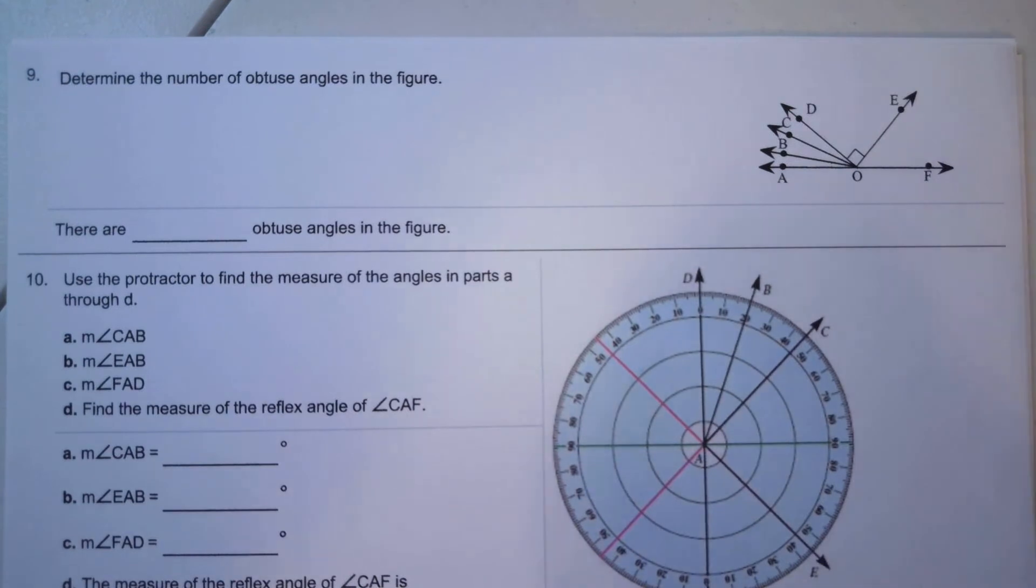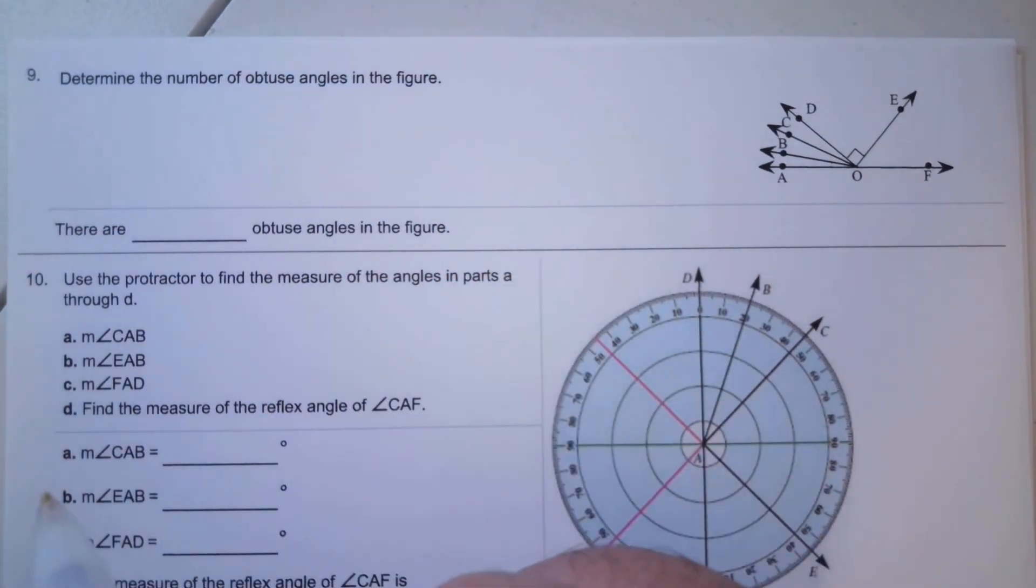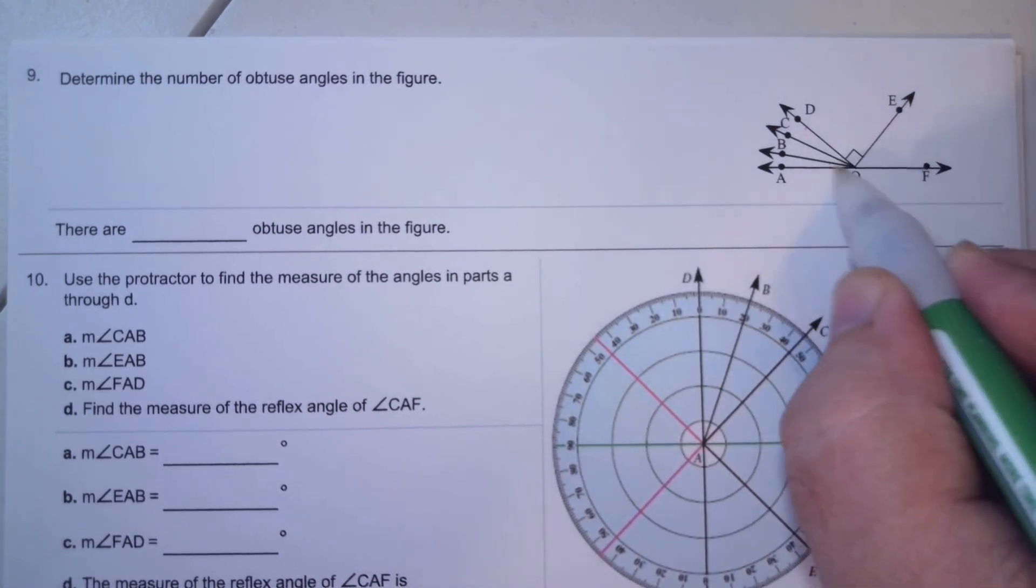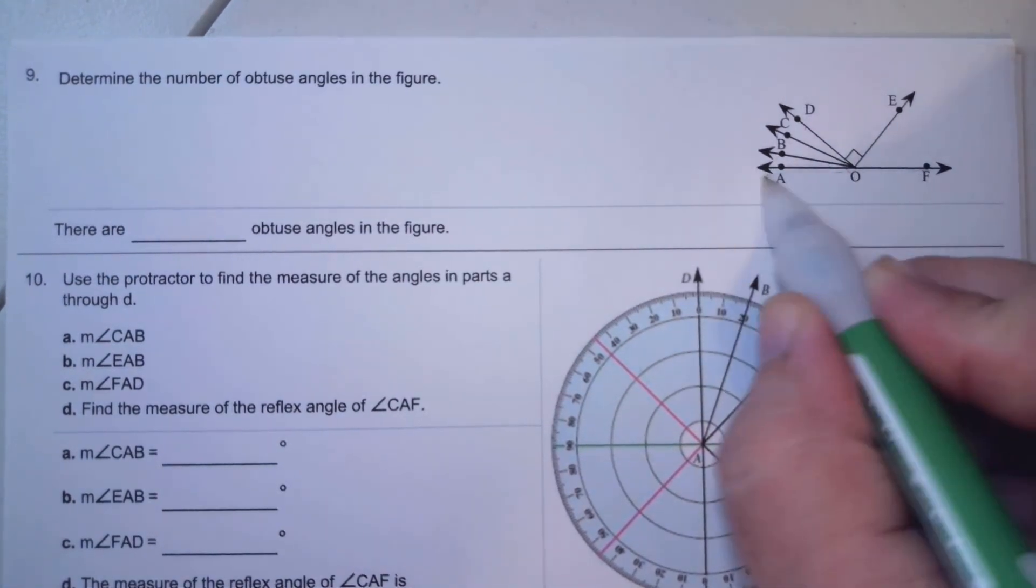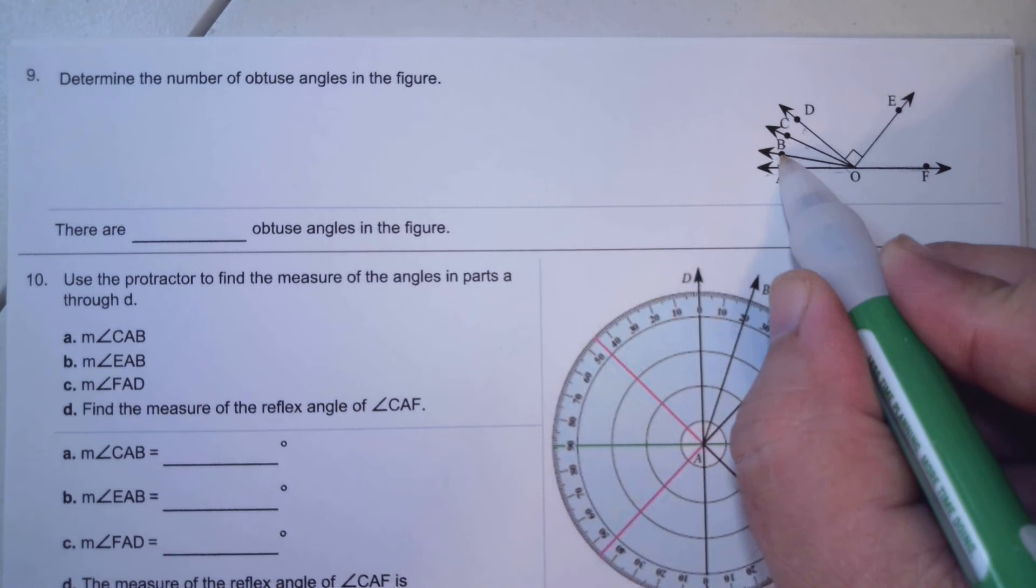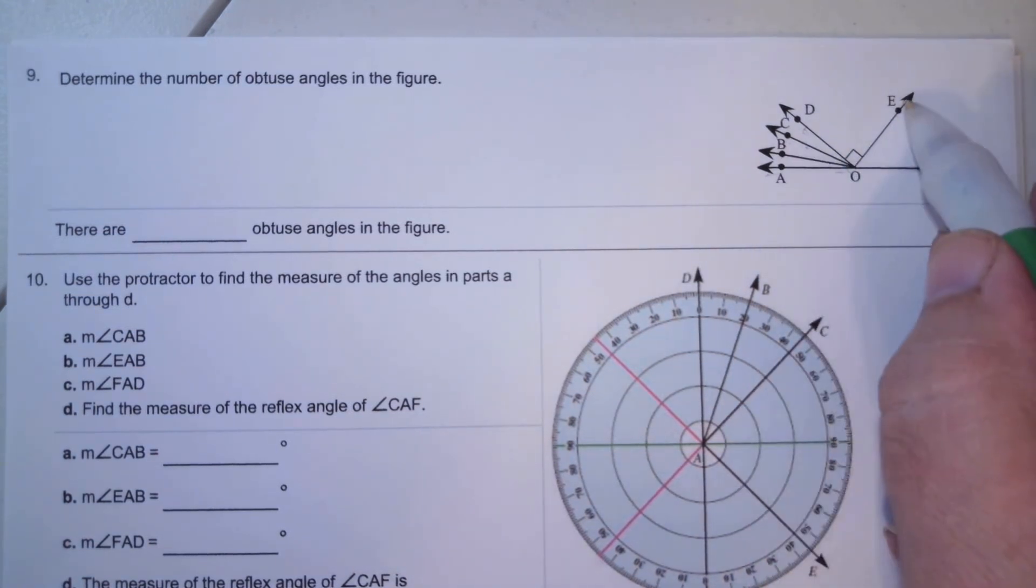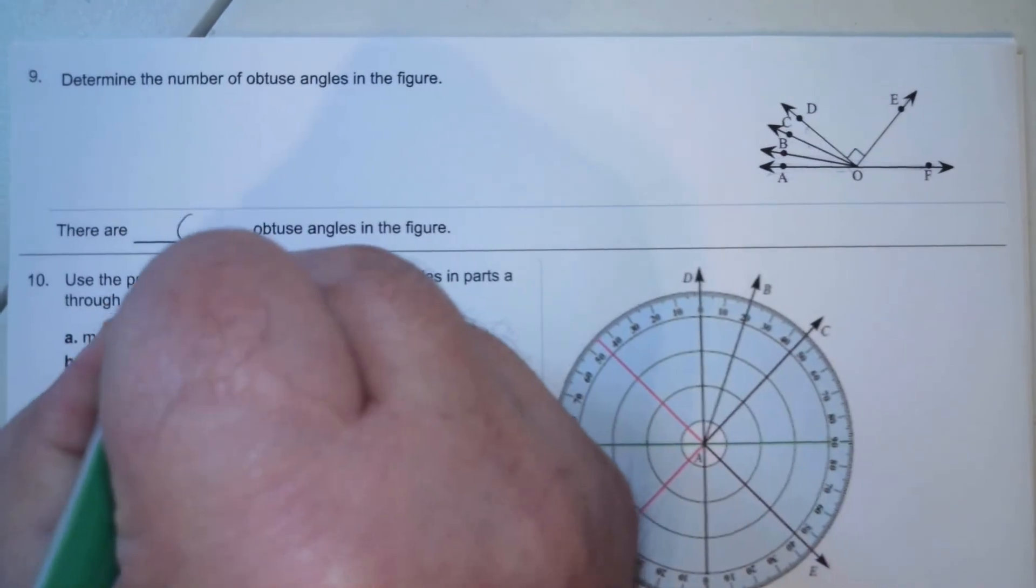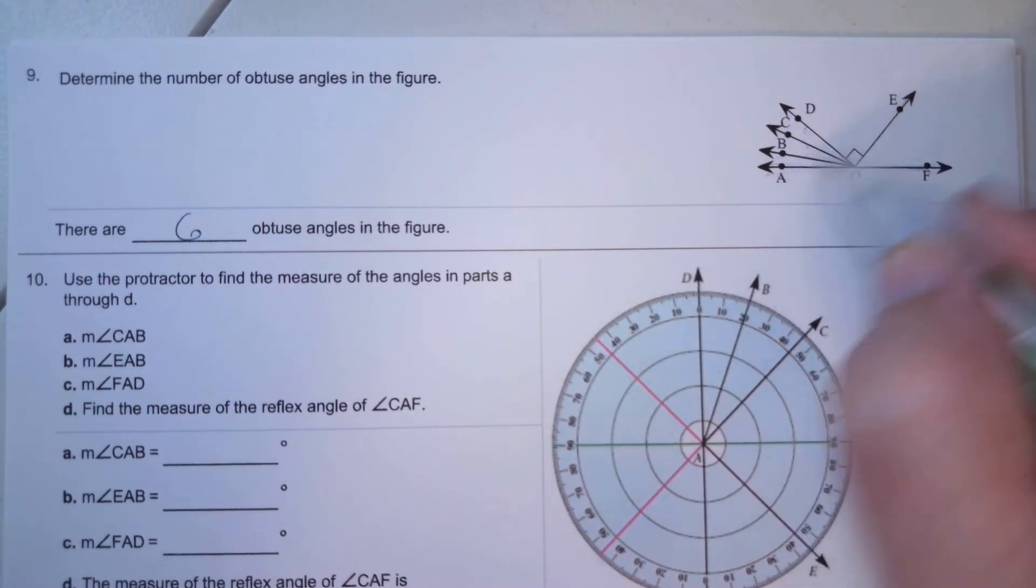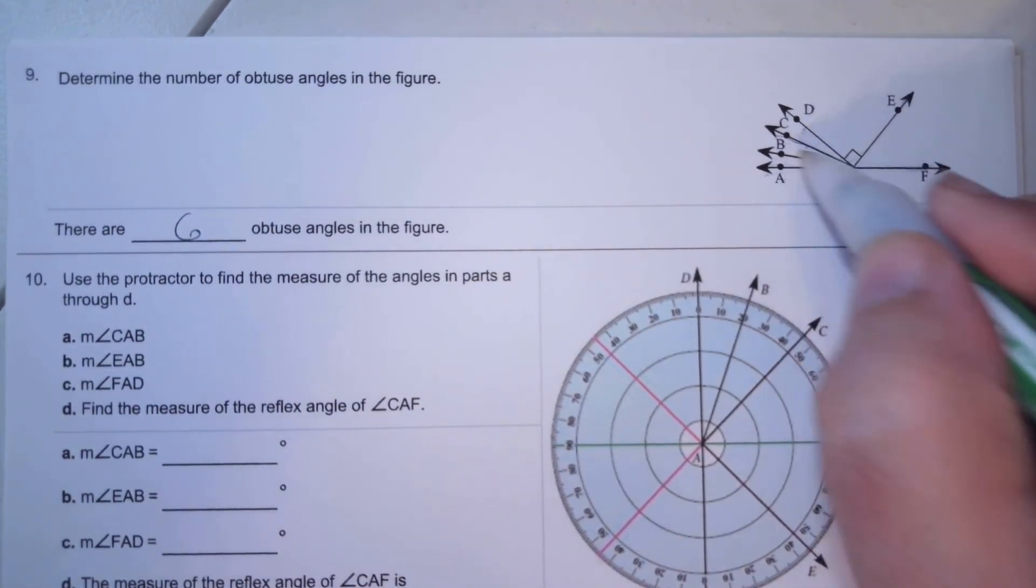Number nine: determine the number of obtuse angles in the figure. Here we have 1, 2, 3, 4. I can't count the right angle or straight angle. So it's 1, 2, 3, 4, 5, 6, because it can't equal 90 or 180. Anything else: 1, 2, 3, 4, 5, 6.